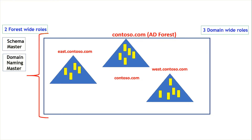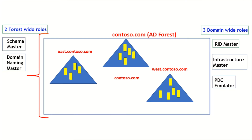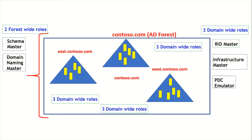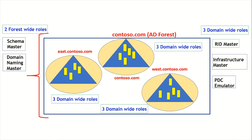The three domain-wide roles — RID master, infrastructure master, and PDC emulator — mean every domain will have these three roles. So east.contoso.com will have one RID master, one infrastructure master, and one PDC emulator. The same goes for contoso.com and west.contoso.com — every domain has its own RID master, infrastructure master, and PDC emulator.